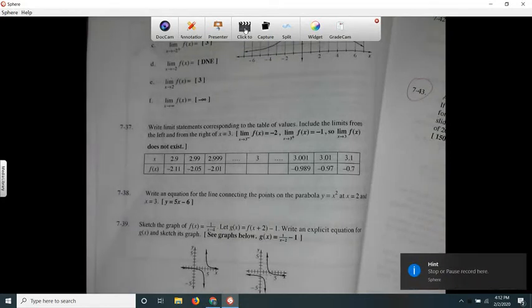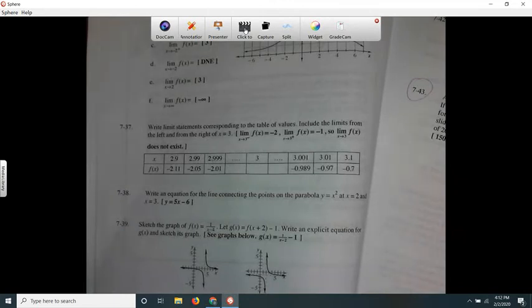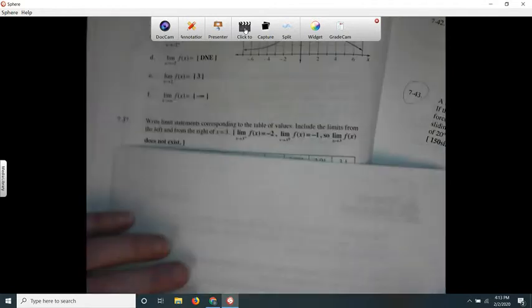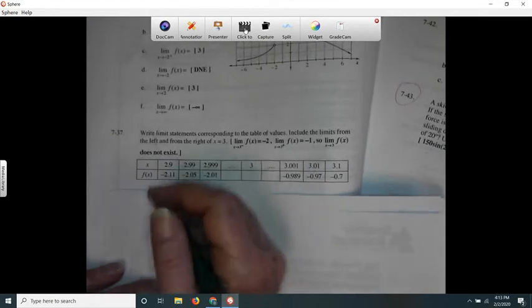So here is problem 7-37. It says write limit statements corresponding to the table of values. Include the limits from the left and from the right of x equals 3. So let's see what's happening here. This part's the answer - you're not supposed to be able to see that yet.